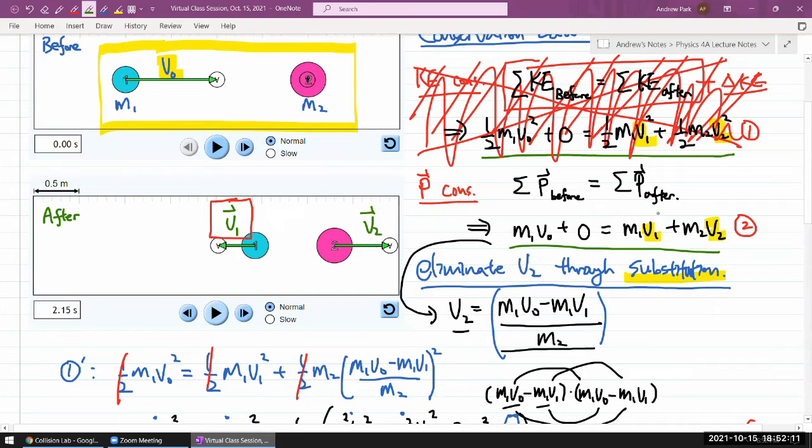Now, completely inelastic collision is different in this way. With completely inelastic collision, the information that you are given, which won't always be spelled out for you, is this: that V1 is equal to V2.